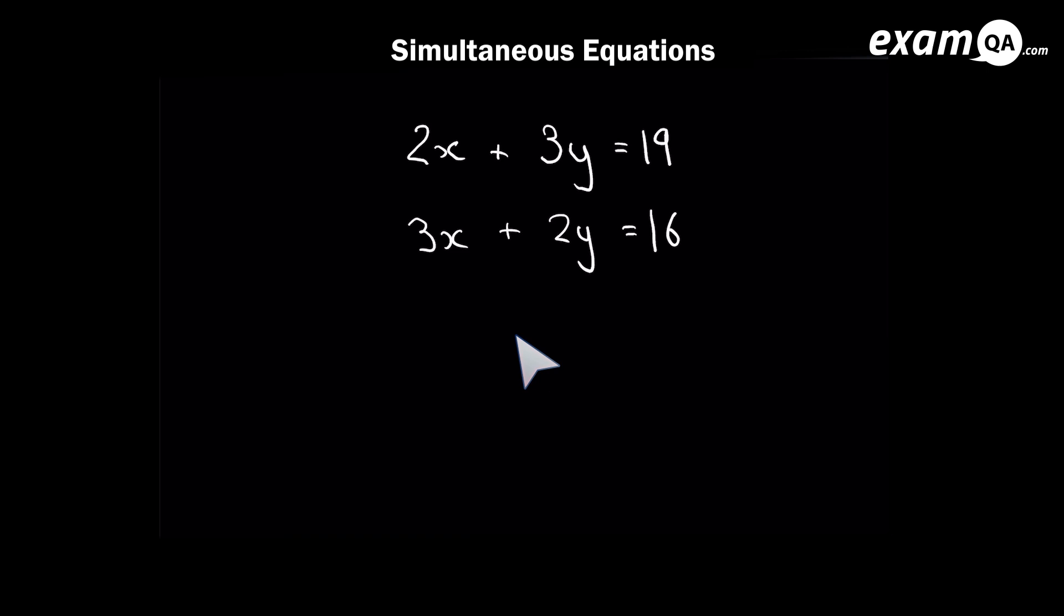So the first step is to try to make the x's the same. Now, just like fractions, you can times the whole equation by any number and it doesn't change the equation. So we can times the top equation or the bottom equation by whatever number we like. However, we're going to aim to times it by a number such that the x's become the same on both. So on the top one, we've got 2x.